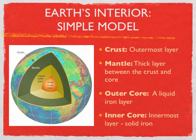There are two parts to the core: the outer core and the inner core. The outer core is actually liquid — it's made out of iron. And the inner core is solid, also made out of iron.